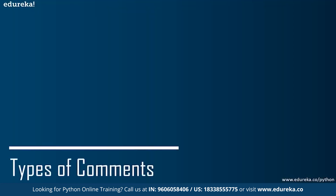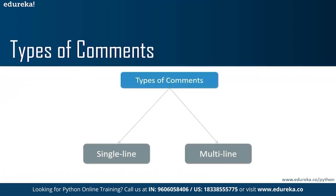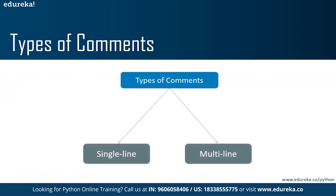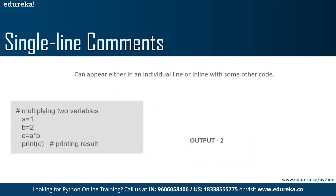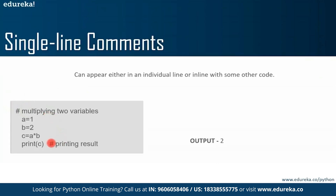Now let us move ahead and see what are the types of comments. Comments can either be single line or multi-line. Single line comments can either appear individually or inline with some other code. Multi-line comments have to be preceded by a hash character in every line they appear. Let's see a small example of single line comments — they can appear either in an individual line or inline with some other code.